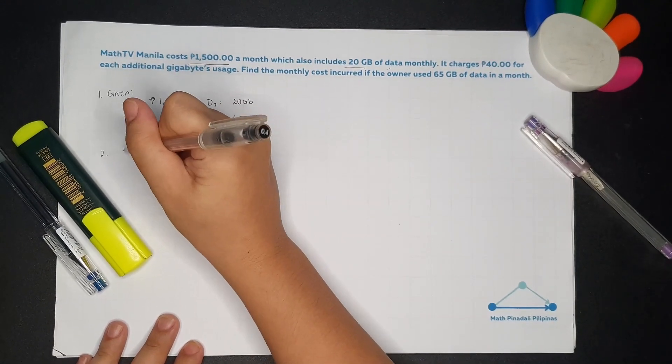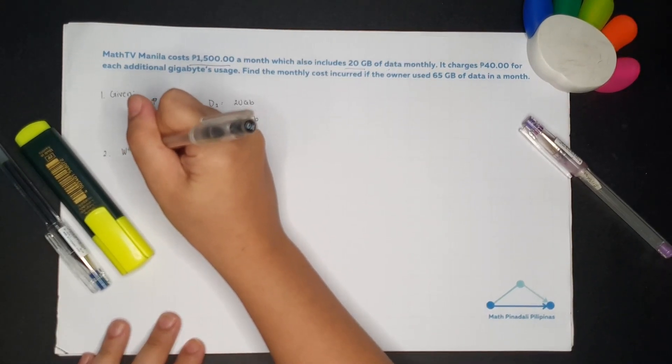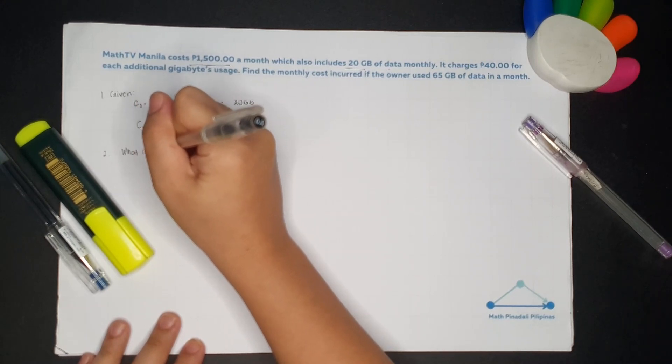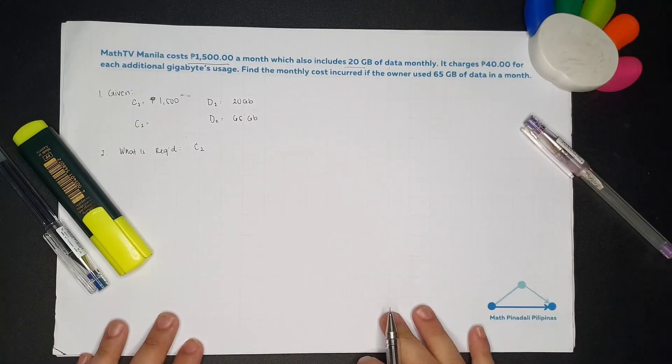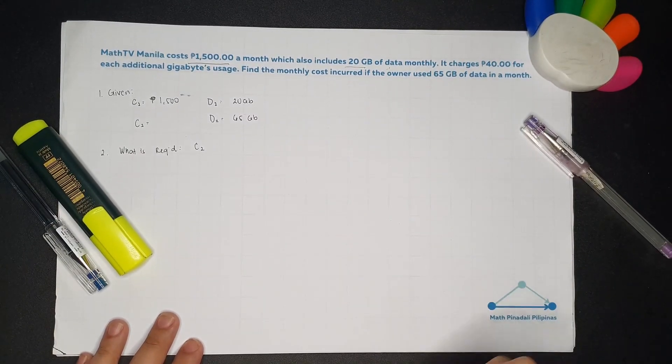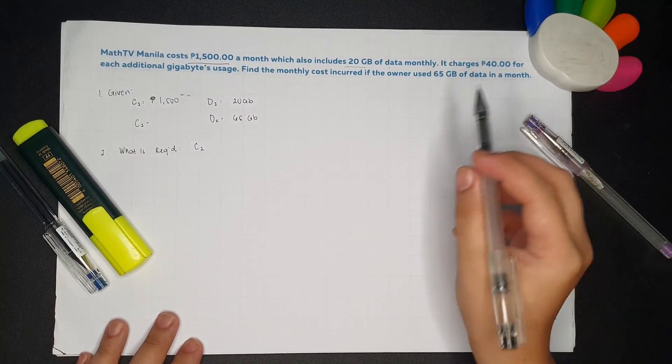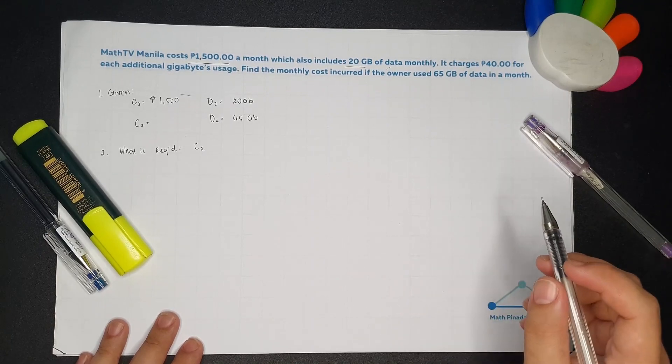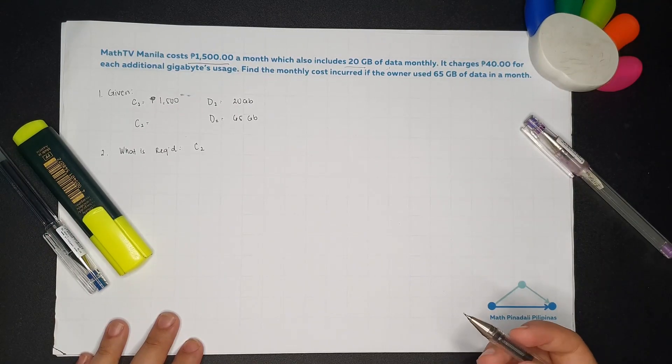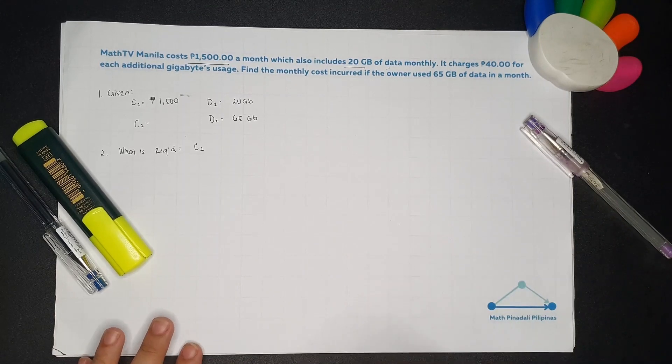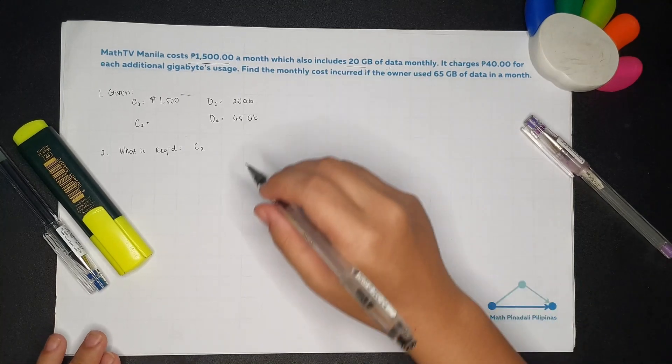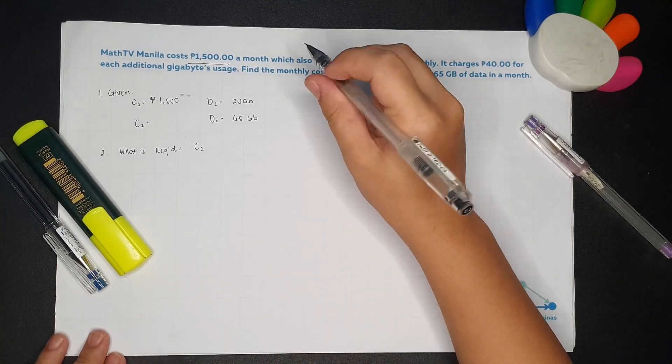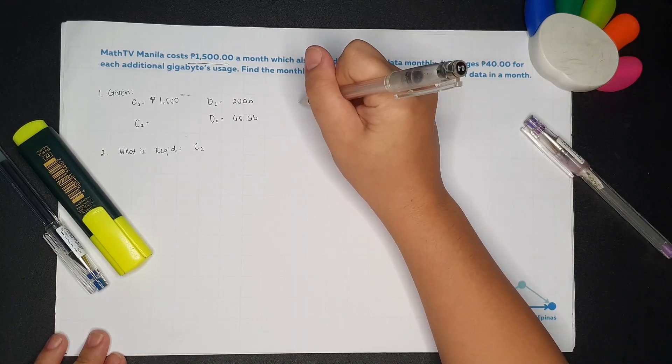What is required is the C2. But there's still more given information. It charges 40 pesos for each additional gigabyte usage. So all excess beyond 20 GB is 40 pesos each. So we can write that function.